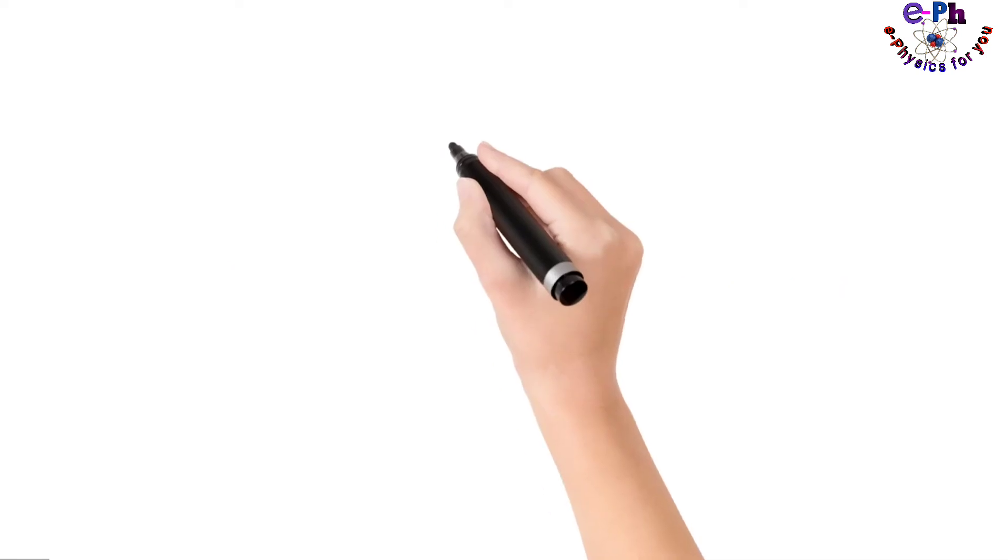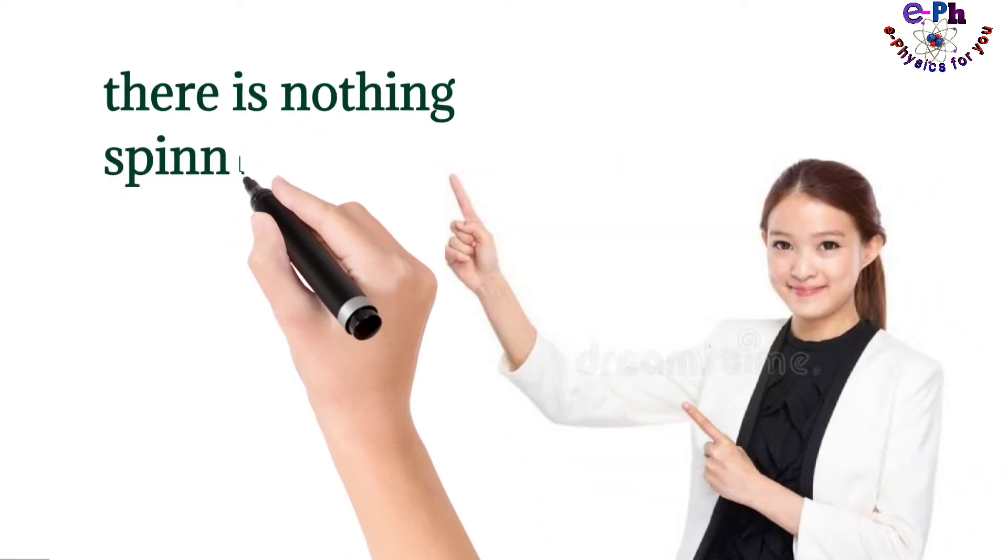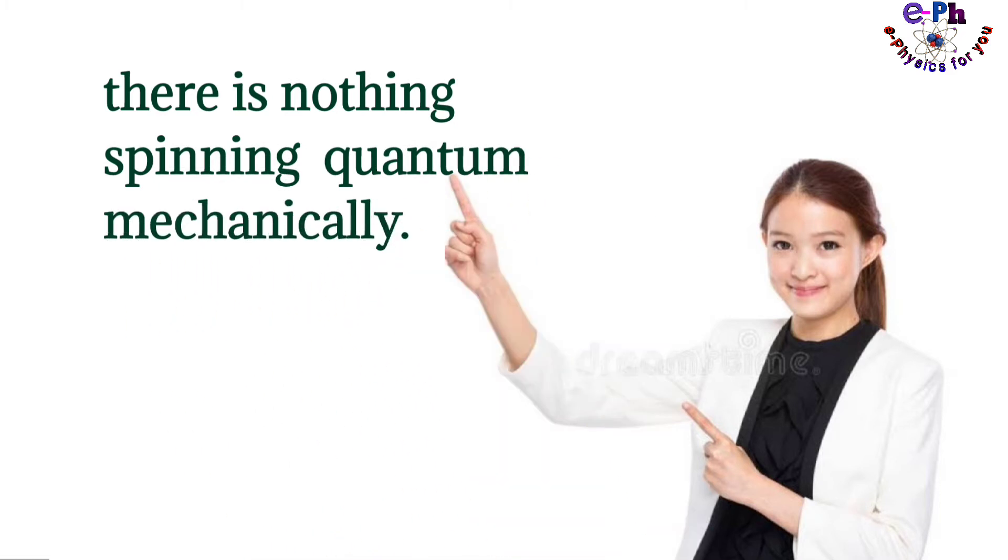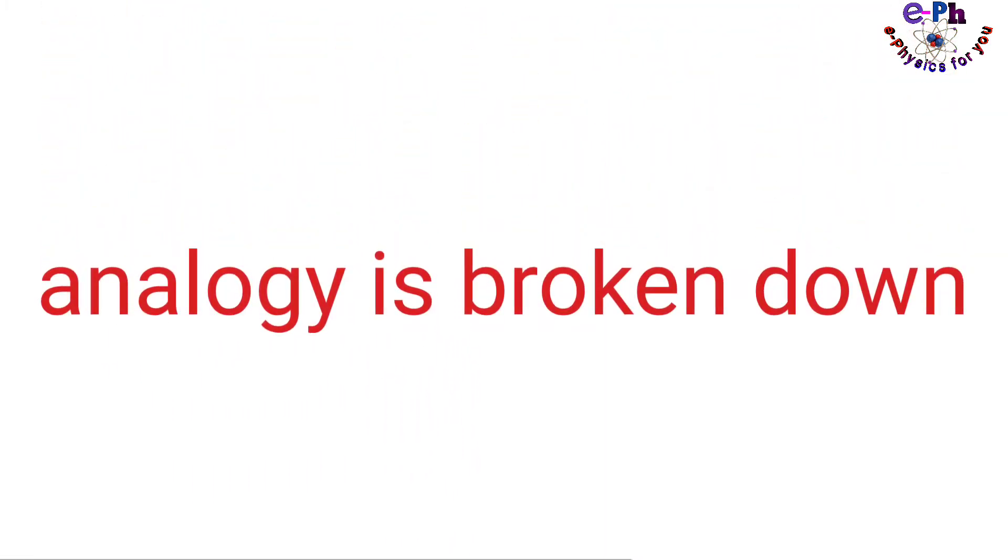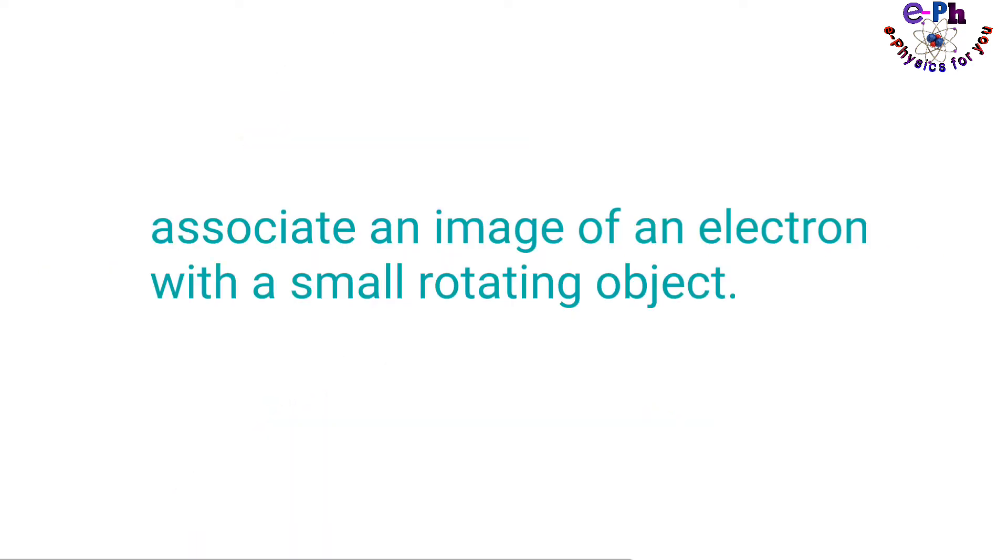I would like to point out that there is nothing spinning quantum mechanically, so here the analogy is broken down and we realize that it is confusing to associate an image of an electron with a small rotating object.